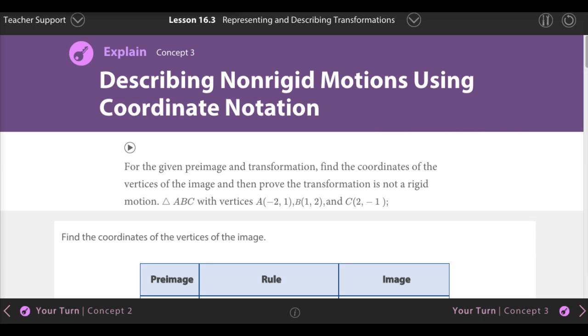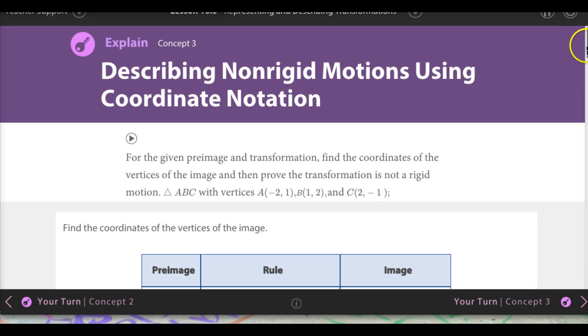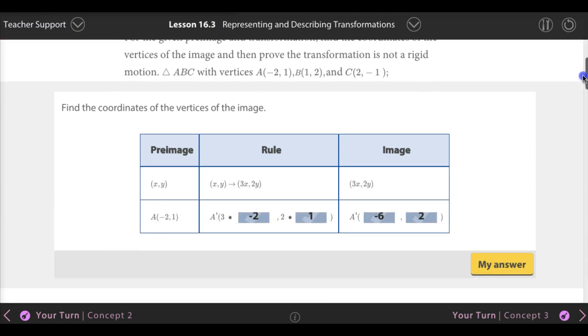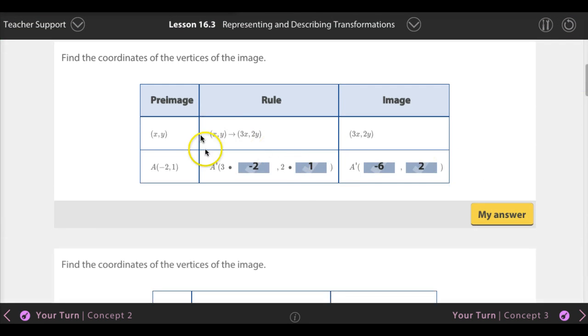Now over here, we're talking about non-rigid motions. Right before this, we talked about rigid motions, and that was translations, rotations, and reflections. Non-rigid motion means the shape changes. For example, look, what are we doing? We're making x bigger by multiplying by 3 and y bigger by multiplying by 2. So we plug in the numbers and we'll get A prime.